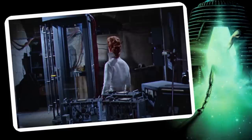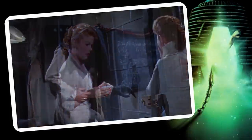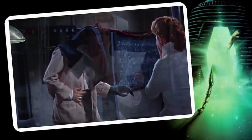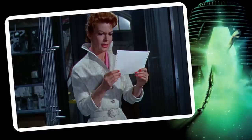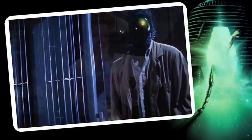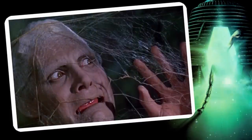Después de estar satisfecho de que estas pruebas están teniendo éxito, construye un par de cámaras del tamaño de un hombre. Un día, Hélène, preocupada porque André no ha subido del laboratorio del sótano durante un par de días, baja para encontrar a André con un paño negro sobre la cabeza y una extraña deformidad en la mano izquierda. Al comunicarse solo con notas mecanografiadas, André le dice a Hélène que trató de transportarse a sí mismo, pero que una mosca fue atrapada en la cámara con él, lo que resultó en la mezcla de sus átomos. Ahora tiene la cabeza y el brazo izquierdo de una mosca.